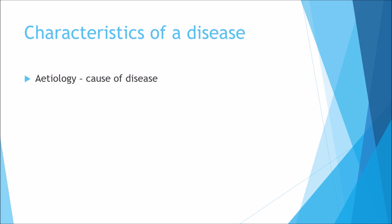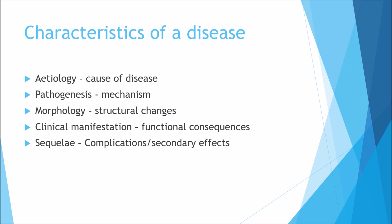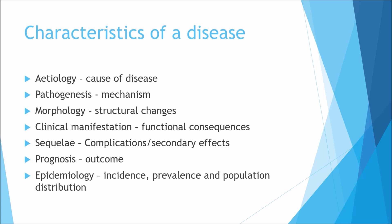Some of the characteristics of a disease begin with etiology — what causes the disease. Then pathogenesis, the mechanism of the disease and how the biochemistry impacts on you. Morphology covers the structural changes that occur as a result of the disease. Clinical manifestation refers to the functional consequences — what symptoms and signs arise. Sequelae are the complications or secondary effects of the disease. Prognosis is the outcome once you've had the disease. Epidemiology covers incidence, prevalence and population distribution — it's the study of diseases in the population, including social factors.